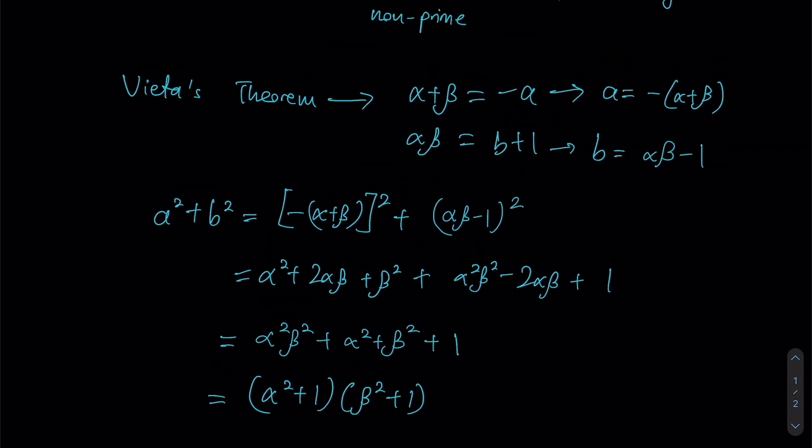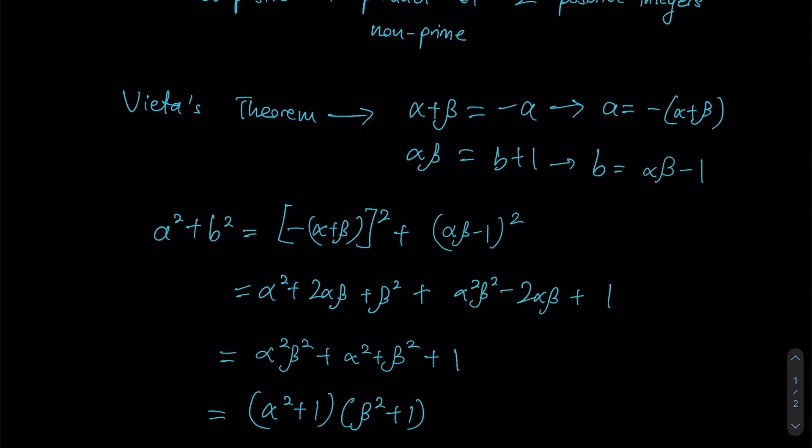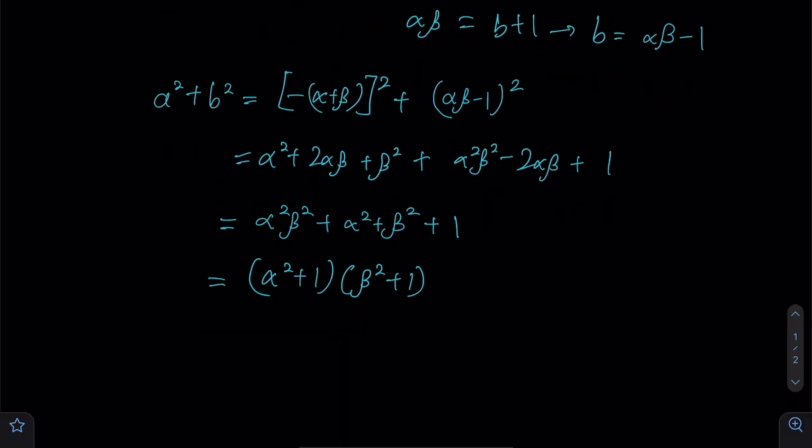We're trying to show that a² + b² is a composite number, aka it's a number that's not prime. Now, given that alpha and beta are natural numbers, then these two factors must be natural numbers as well.